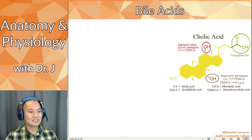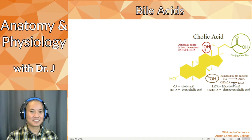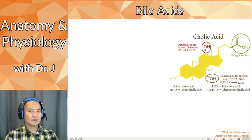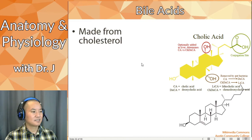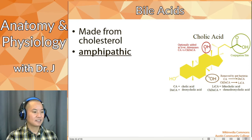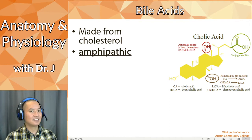Notice that bile acids kind of look like cholesterol — this is more organic chemistry and biochemistry — but colic acids and bile acids have a cholesterol overall structure, slightly modified by the liver to make something that's part lipid and also has hydrophilic components. So they're made from cholesterol, but they're amphipathic, meaning they're both hydrophobic and hydrophilic in certain areas. This yellow part right here is hydrophobic, but the red parts and the green parts are hydrophilic.